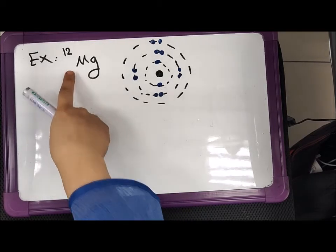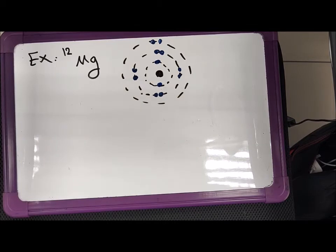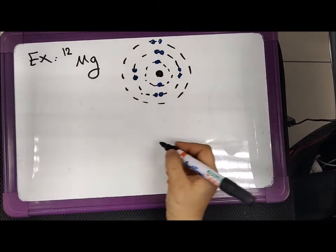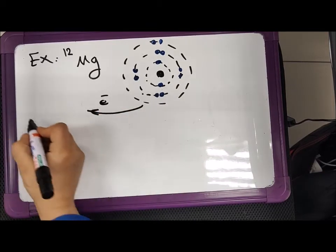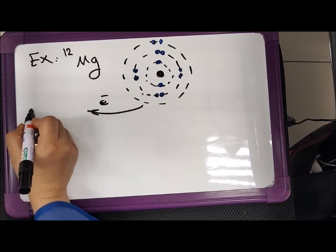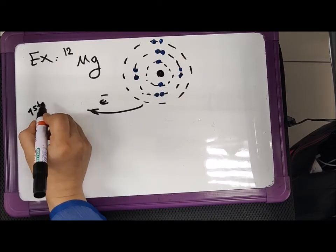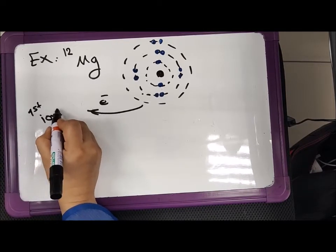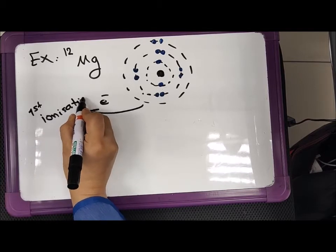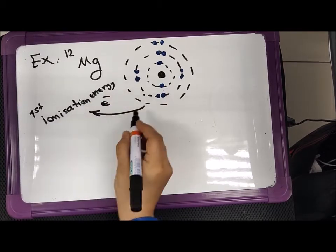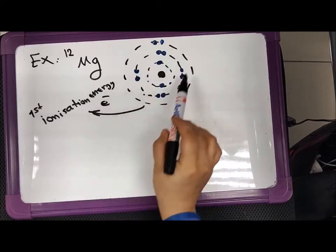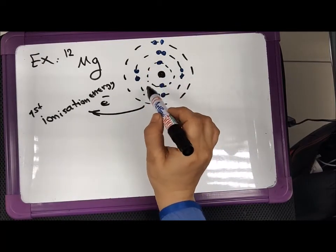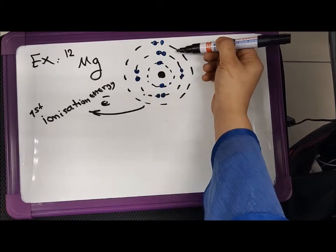In the ground state, it has 12 electrons and 12 protons. For the first ionization energy, we remove one electron from it — one mole of electrons — and this is the first ionization energy. This one mole of electrons that we take out is usually from the outer shell, not from the shell inside.